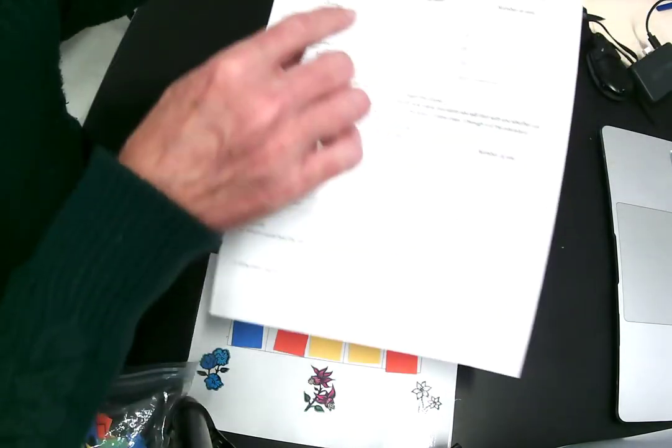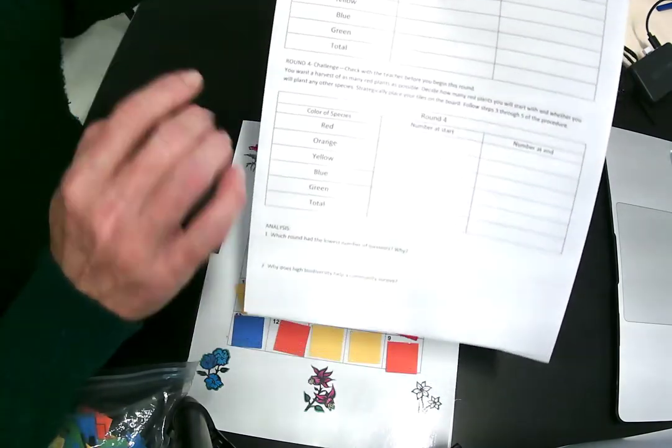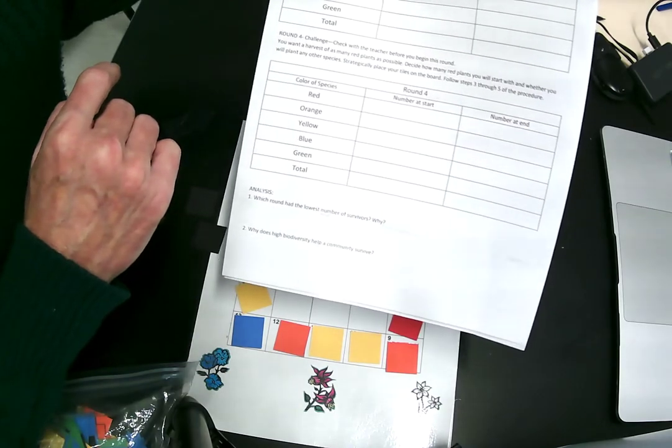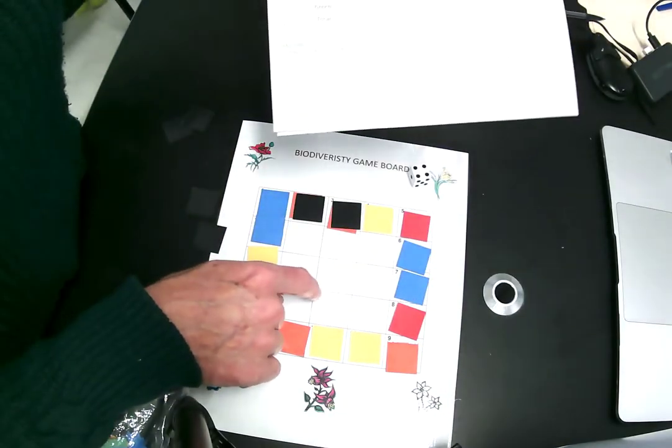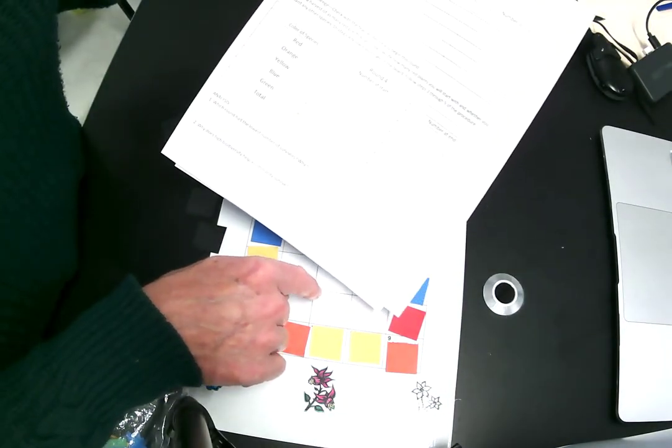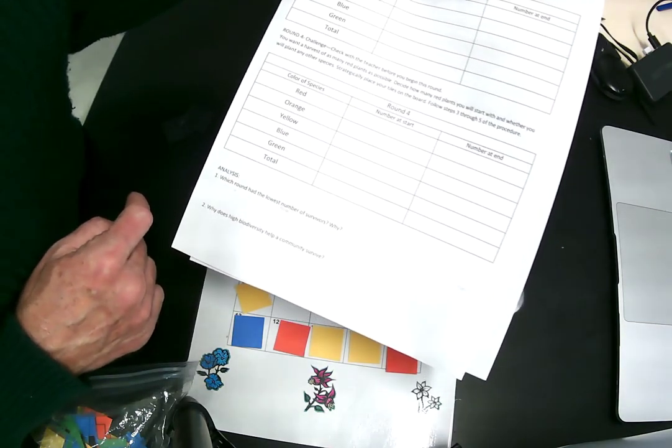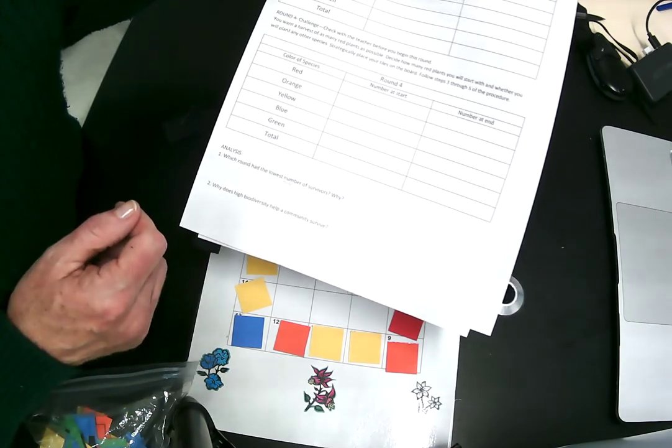Follow the directions for the next round. The next round is moderate biodiversity. And round three is low biodiversity. Round four is a challenge. You have to figure out how to set up a field so that you get the most red flowers at the end. And you can do that a couple times. See what works best.